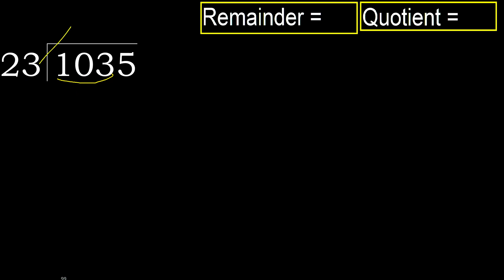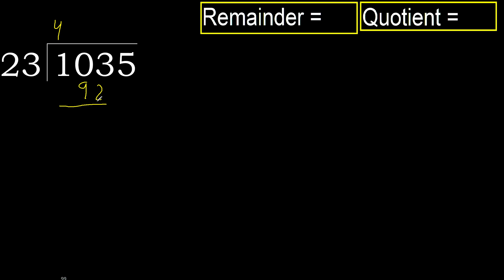23 multiplied by which number is nearest to 103, but not greater? 23 multiplied by 5 is greater. Multiplied by 4 is 92 — it's not greater, okay. Subtract: 103 minus 92 is 11.